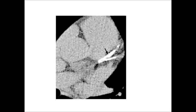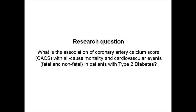The Coronary Artery Calcium Score is a measure of the total amount of calcium in the coronary arteries and is obtained from a CT scan. A Coronary Artery Calcium Score, or CACS, greater than or equal to 10 means that there is a significant amount of calcified plaque in the coronary arteries. In this slide, we can see an example of a positive scan, with the arrow pointing to a coronary calcification.